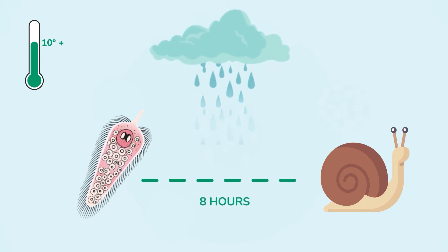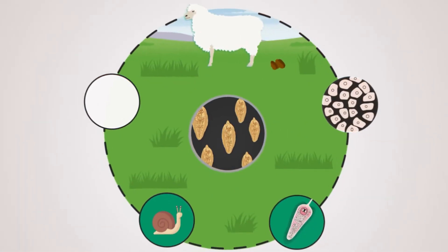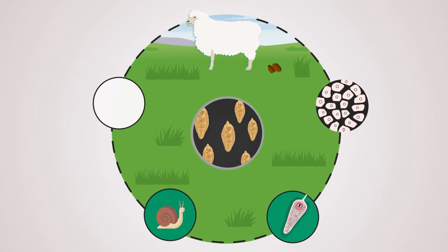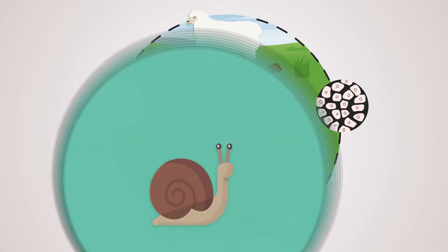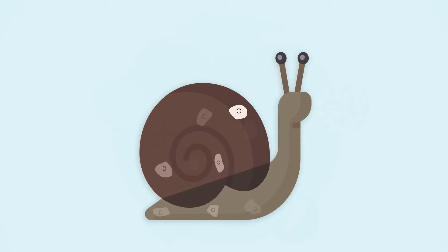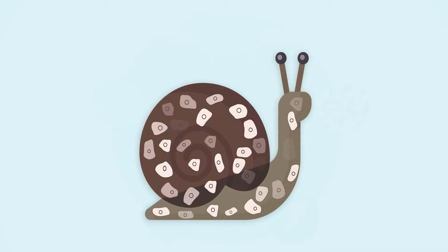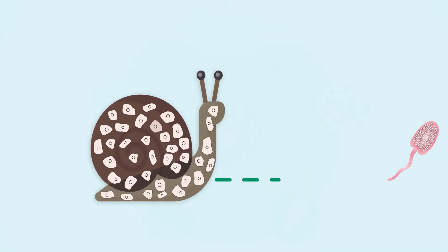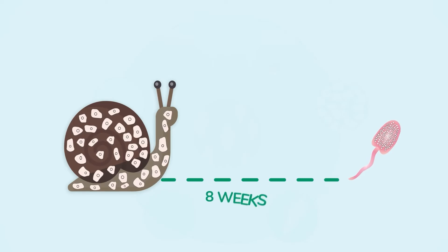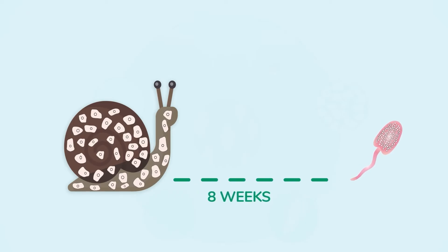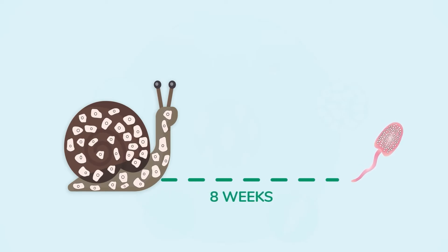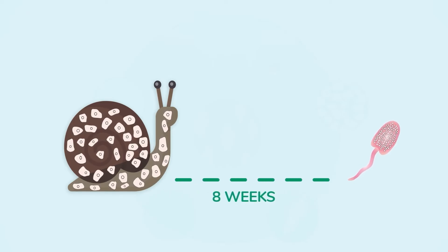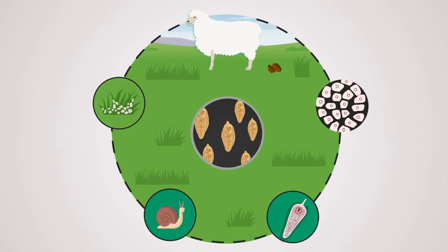After burrowing into the mud snail, the Myracidia multiply rapidly and emerge approximately eight weeks later as Cercaria. Once emerged, they attach themselves to grass where they are ready to reinfect grazing livestock.